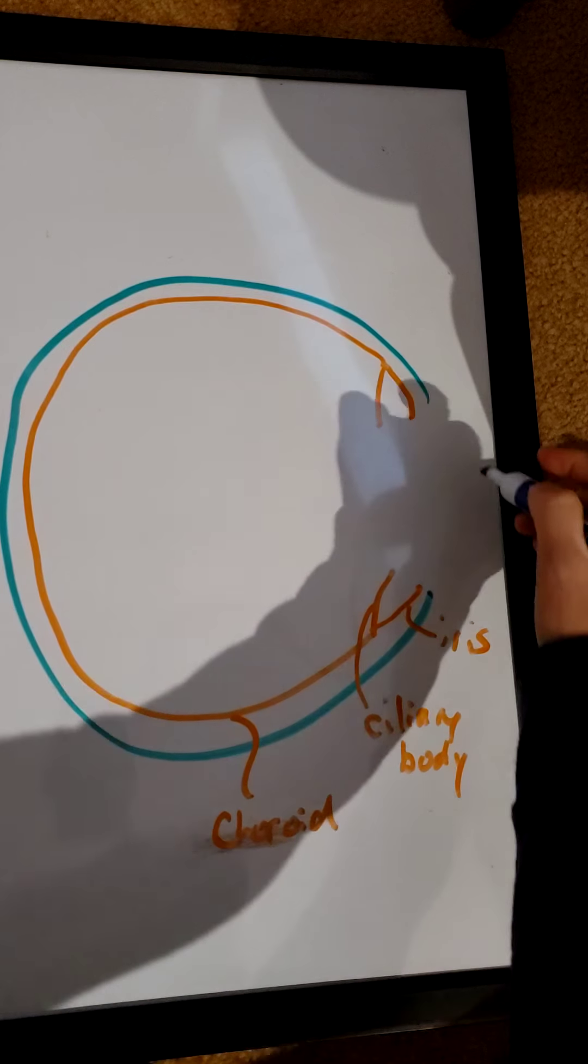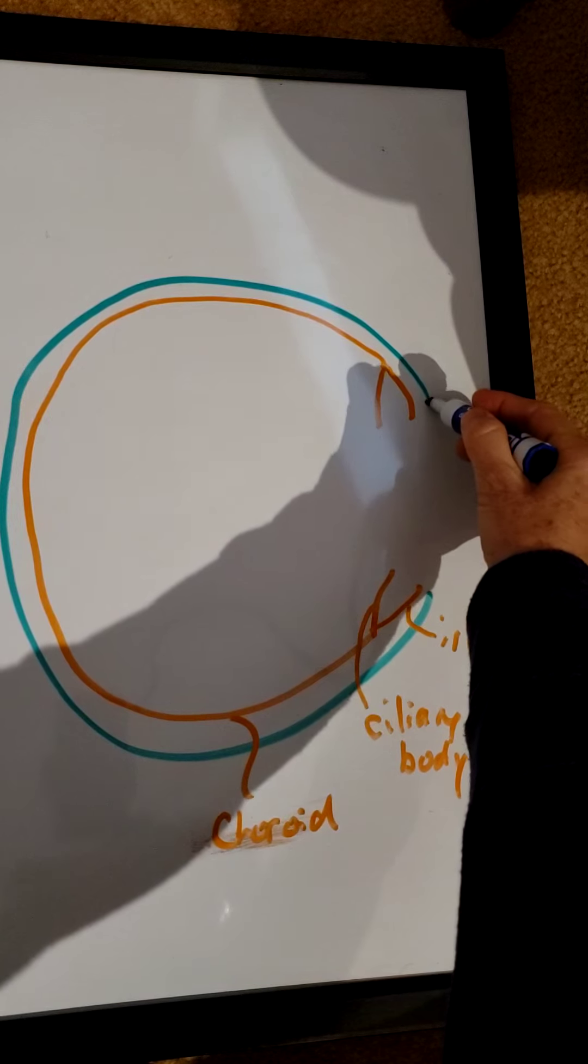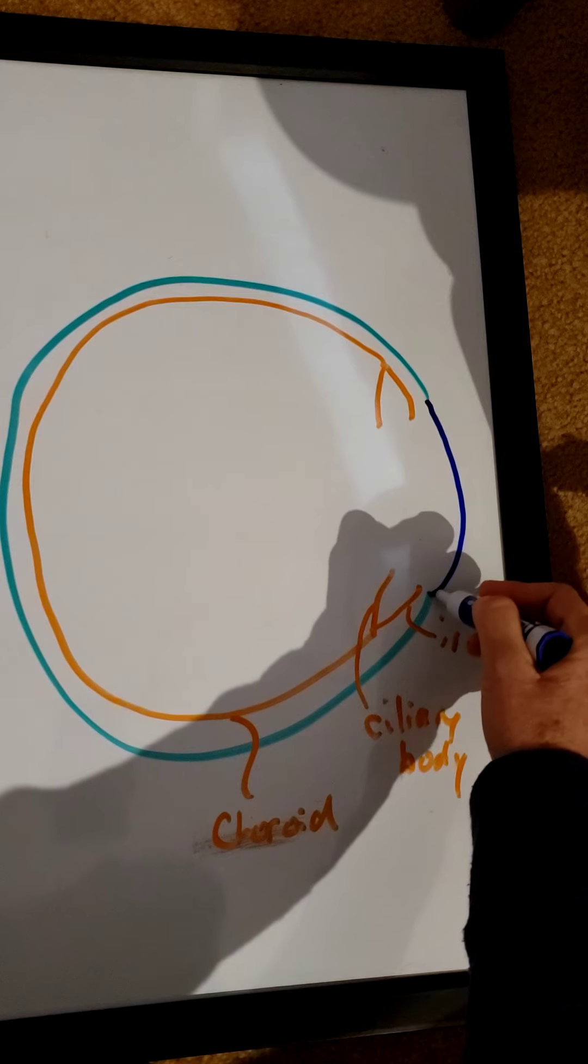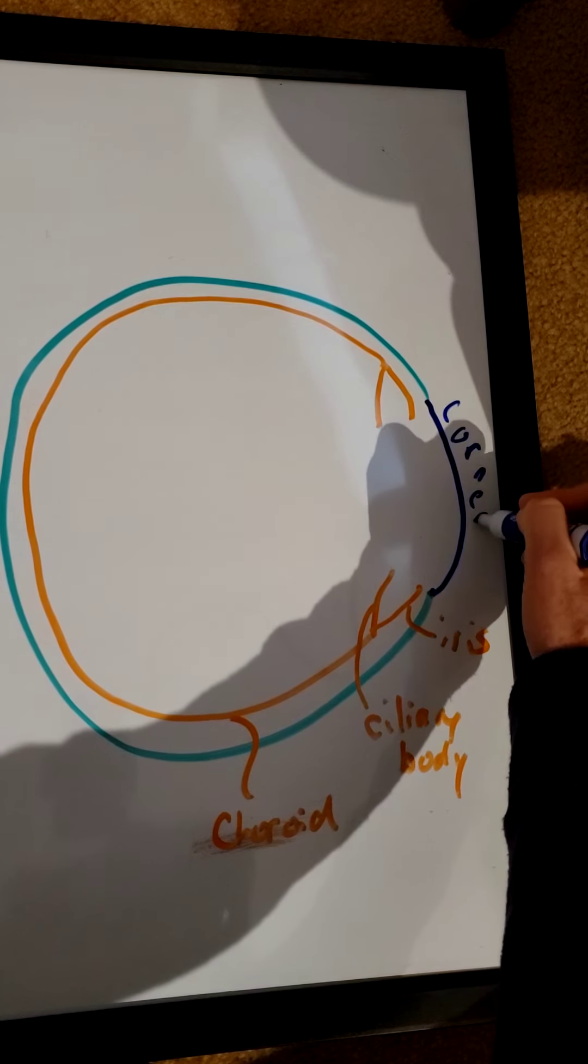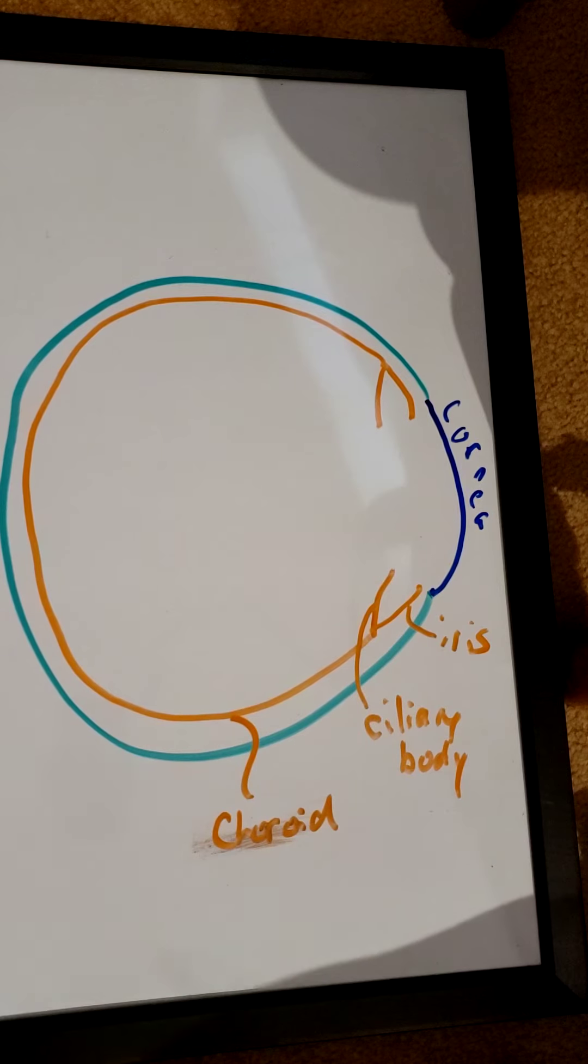The anterior part of the sclera is called the cornea. It bulges out a little bit, so that's the cornea right there in blue.